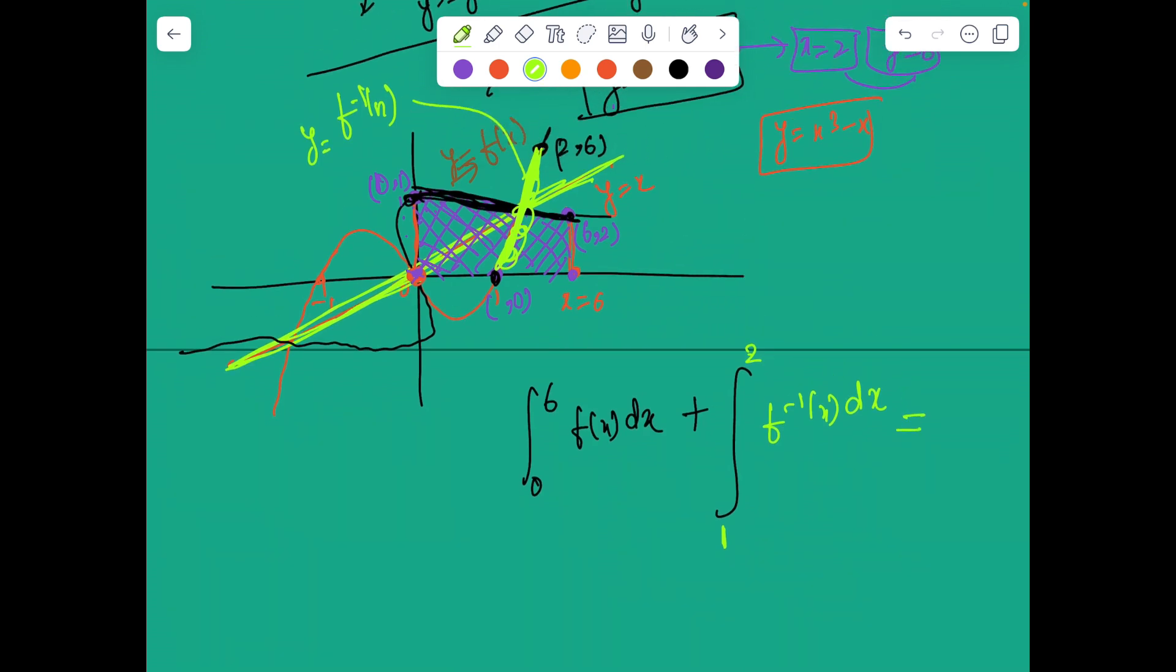Is same as the area bounded by symmetricity by the function f inverse from 0 to 1. So if I add this sum of area of inverse and this area, it will precisely give the area of this rectangle, which is the product of the upper value 6 times 2 minus product of guys below, 0 times 1. So which gives 12 over here.